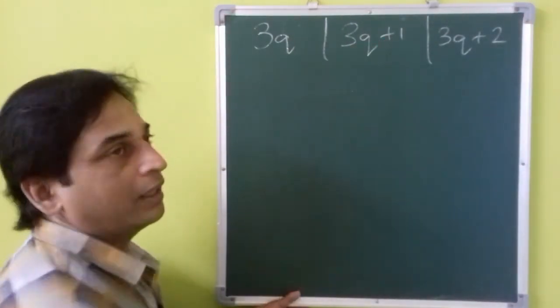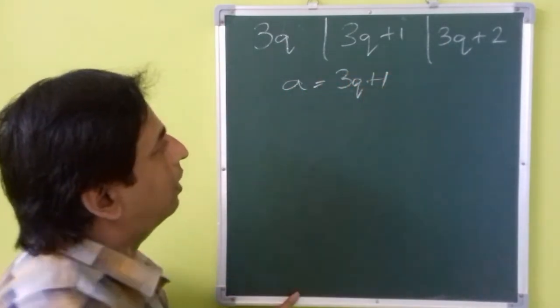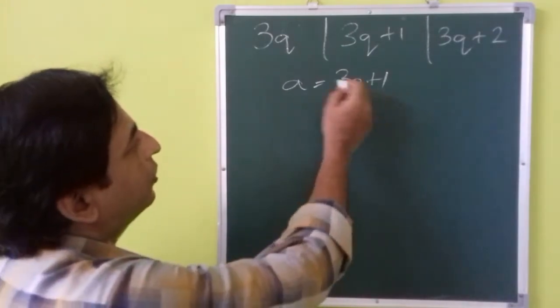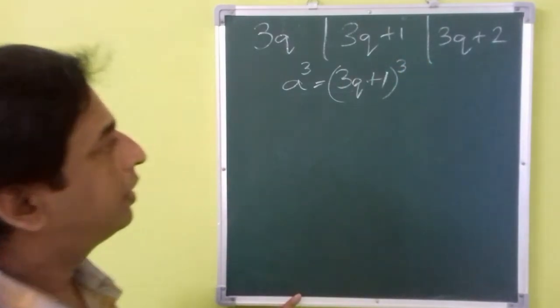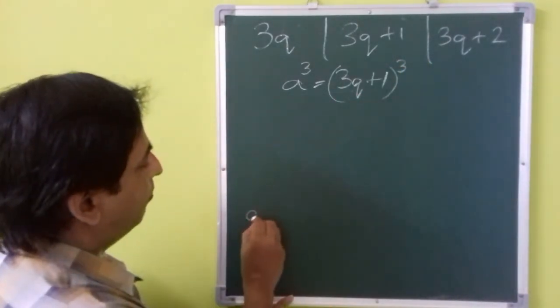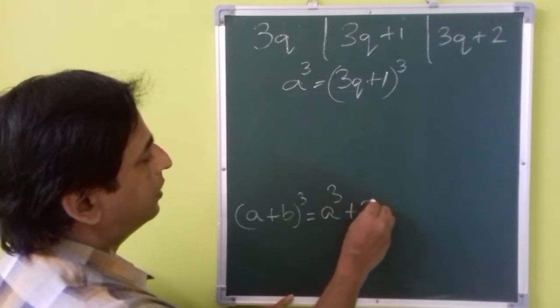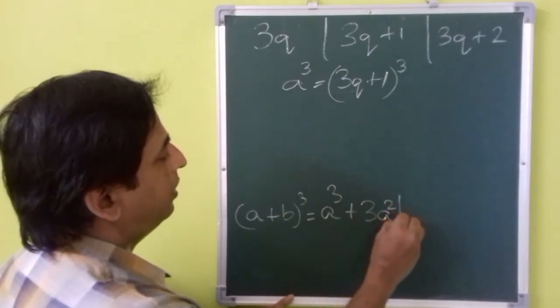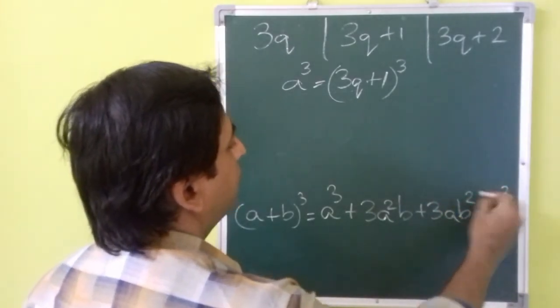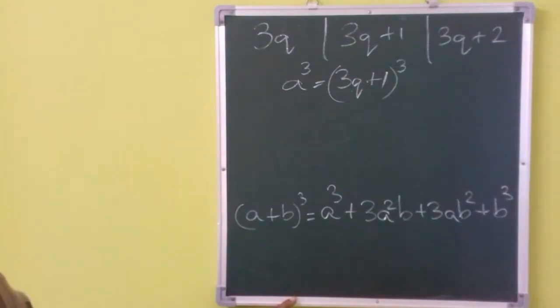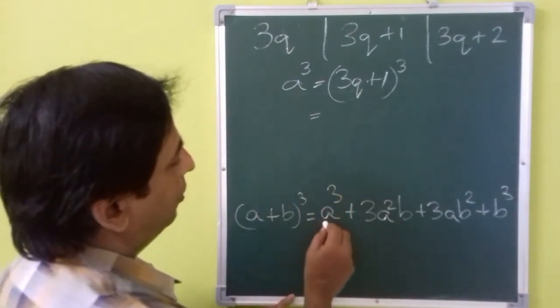Now let's take the second case, which is a is equal to 3q plus 1. If you cube it, you will get a cube is equal to 3q plus 1 to the power 3. Here we can use the identity a plus b to the power 3 is equal to a cube plus 3a square b plus 3ab square plus b cube to expand this. Then how can you expand it? Using this identity a plus b to the power 3.